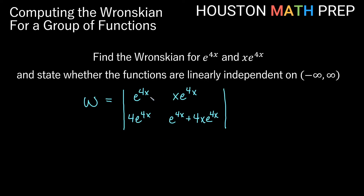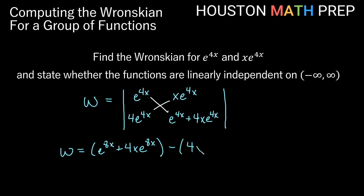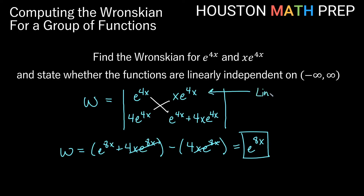To find the 2×2 determinant, we do the main diagonal minus the other diagonal. Taking the top-left to bottom-right diagonal: e^(4x) times (e^(4x) + 4xe^(4x)) gives e^(8x) + 4xe^(8x). Subtracting the other diagonal: xe^(4x) times 4e^(4x) gives 4xe^(8x). Those two 4xe^(8x) terms cancel, leaving a Wronskian of e^(8x). Since e^(8x) is never zero for any real number x, these original functions are linearly independent over all real numbers.